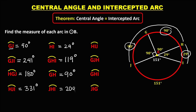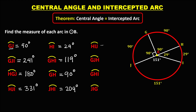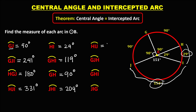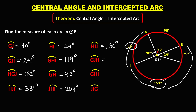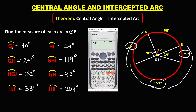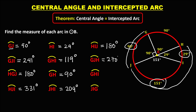For arc HIJ, we add 151 plus 29, which equals 180 degrees. Then for arc GHI, we add 90 plus 151 plus 29, which equals 270 degrees.